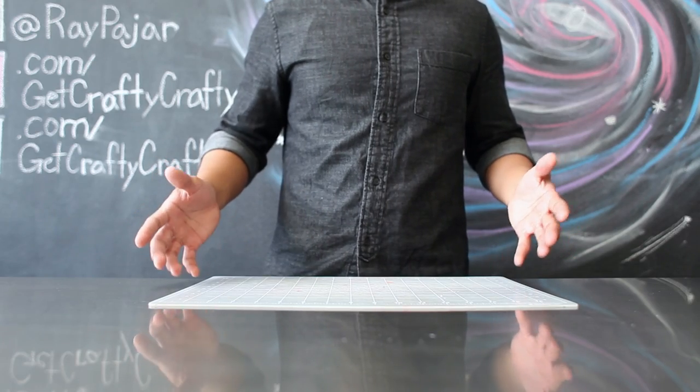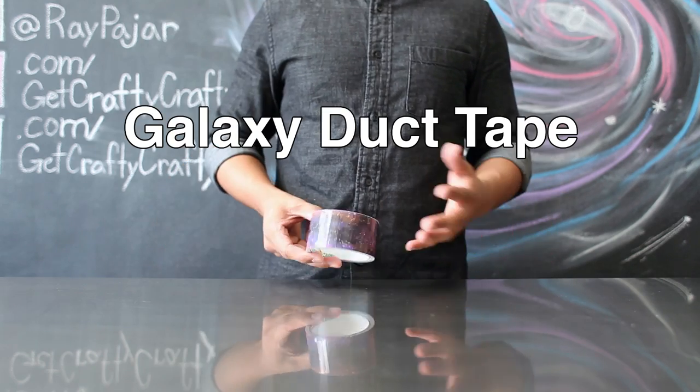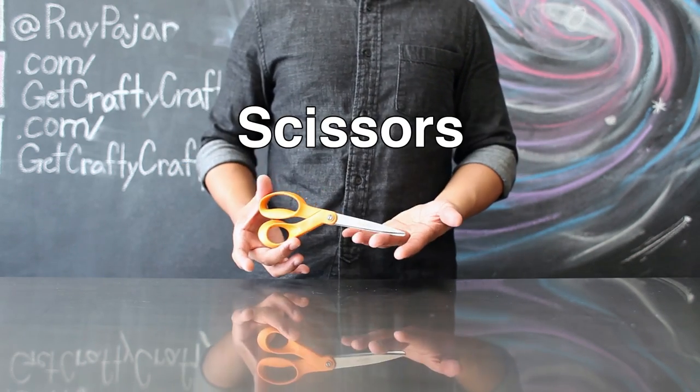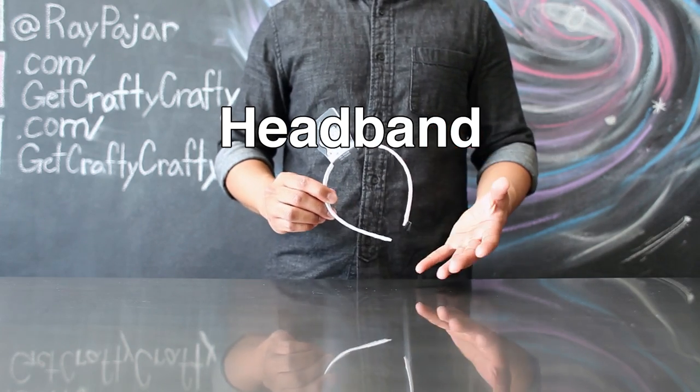The items that you'll need for today's project include a cutting mat, galaxy duct tape, silver duct tape, velcro, an exacto blade, scissors, and a hairband if you decide to make a hairband.